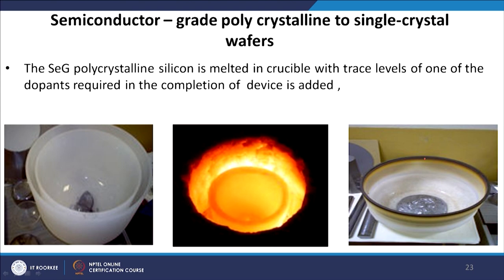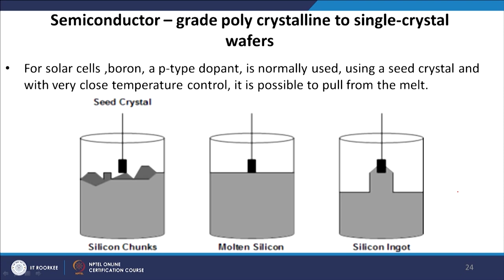Semiconductor grade polycrystalline silicon is melted in a crucible with a trace level of the required dopant added for the device application. Depending on the required impurity — for example aluminum-based or boron-based — we get a doped silicon. For solar cells, boron p-type dopant is normally used. Using a seed crystal with very close temperature control, it is possible to pull a p-type doped single crystal from this melt, giving a silicon ingot.